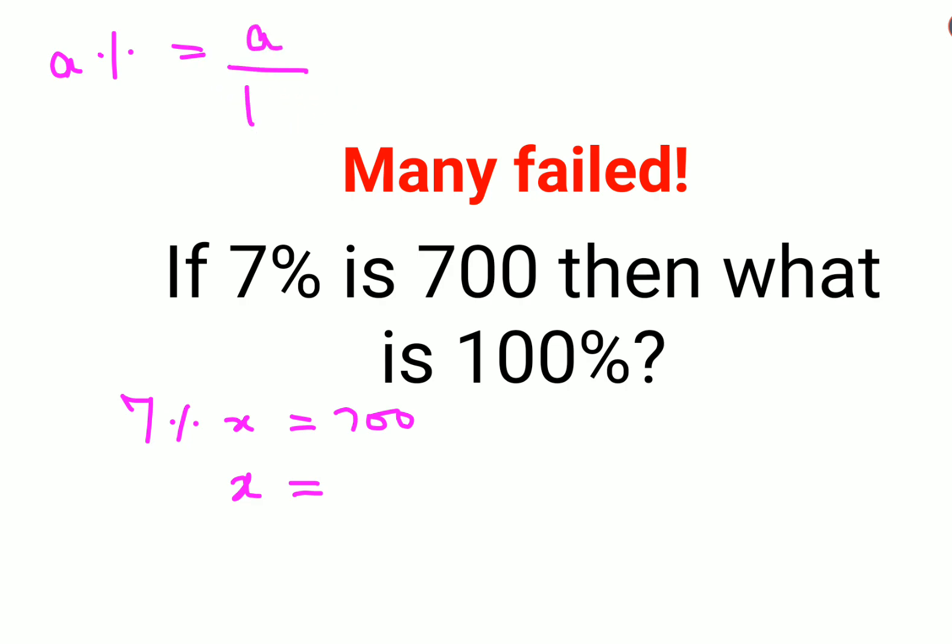By dividing it by 100. Why? Because percent - per means division and cent means hundred. So this can be written as 7/100 times x equals 700.